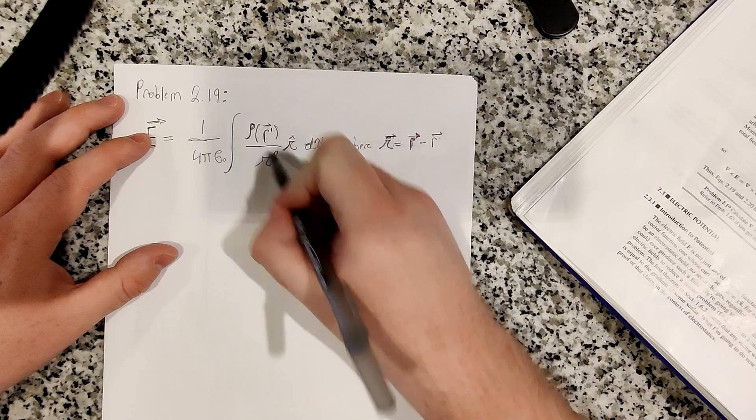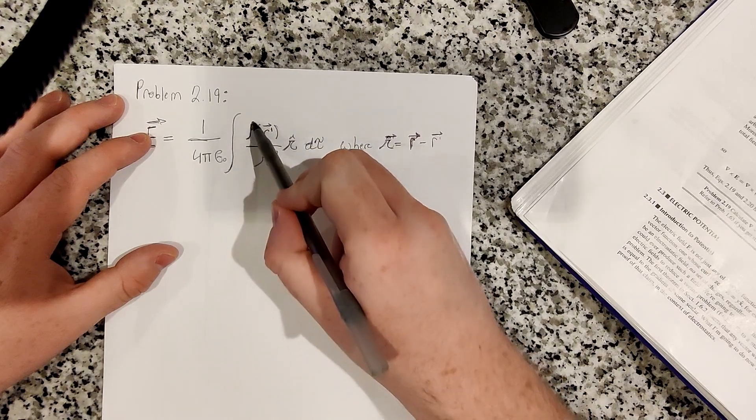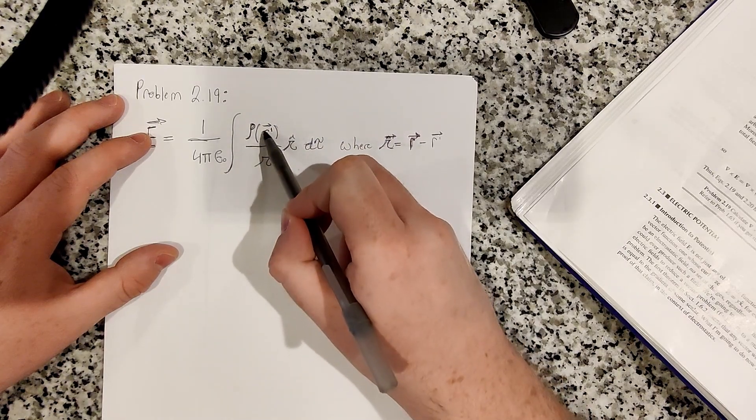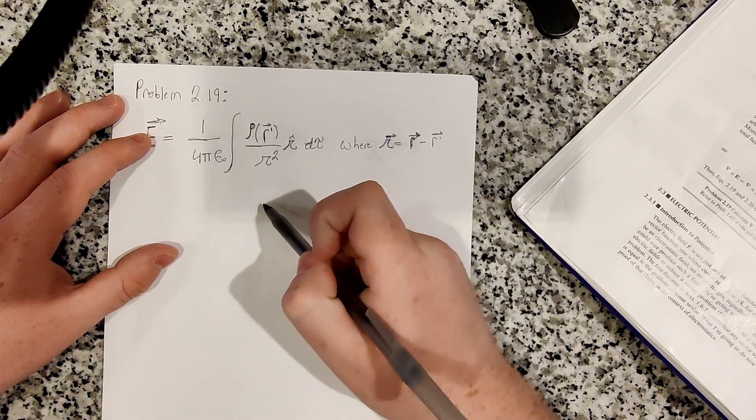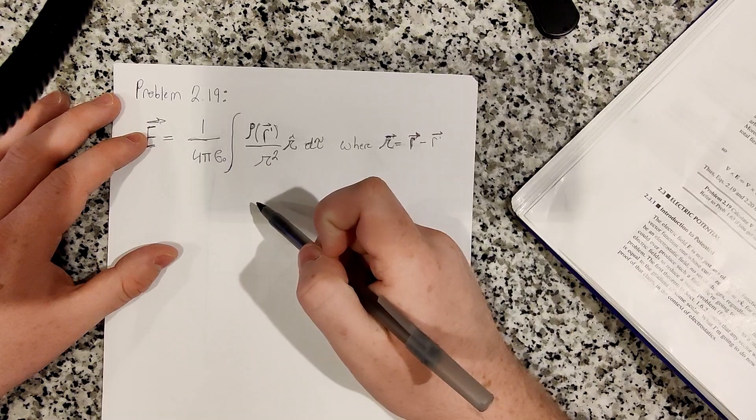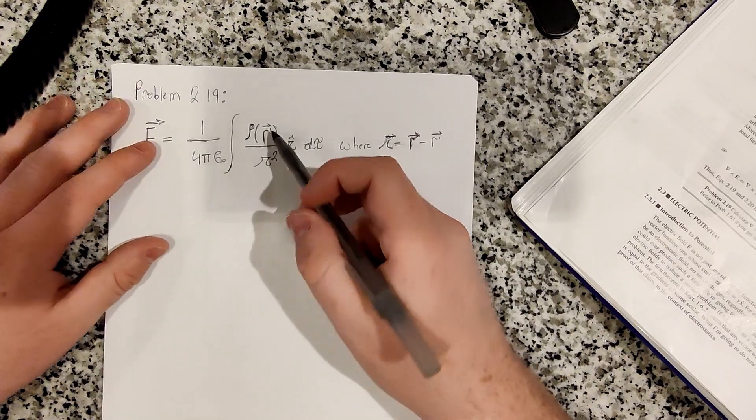And if you remember, the charge density here is a function of r prime. If you remember, r prime is a vector from the origin to the source points, the sources of the fields, so the charges themselves.